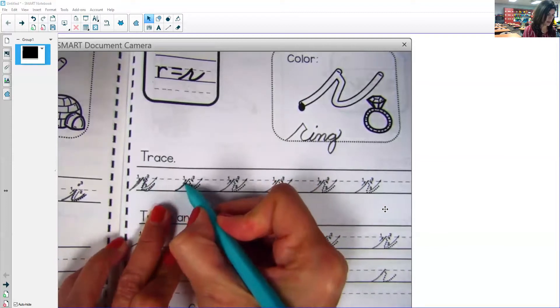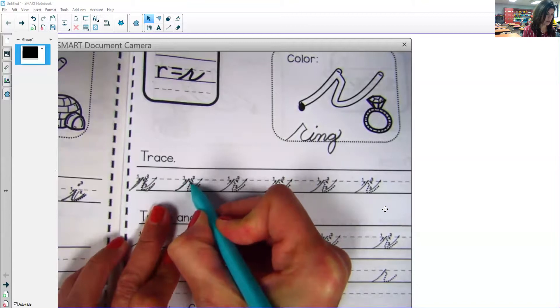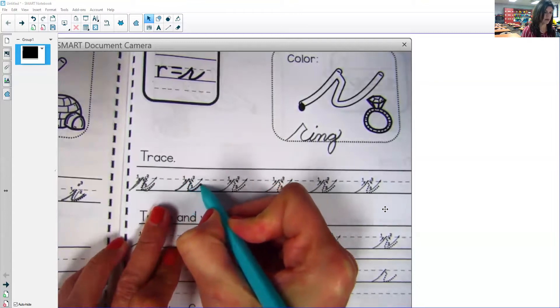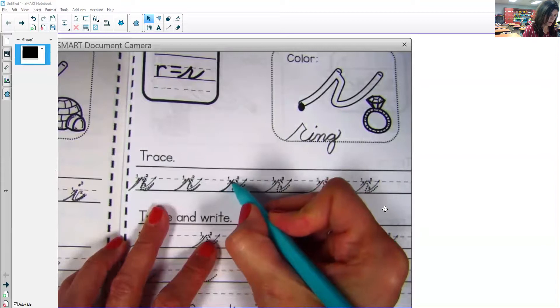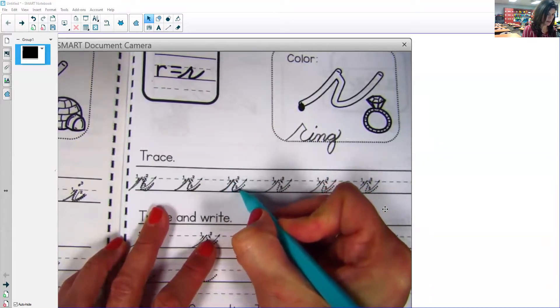Okay, baseline, touch the middle line, slant down, come down and up. Up, touch it, slant down, come down and up.